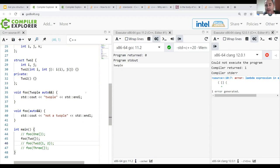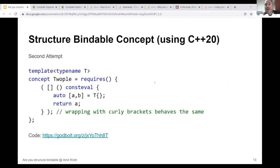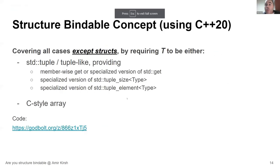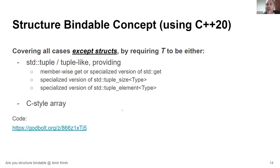Back to the drawing board. We could create a concept that captures the tuple-like cases and C-style array cases, but it would not catch the struct case. And you cannot catch the struct case in C++20, because there's no way to ask a struct: 'do you have all public fields, and how many fields do you have?' So we can have something that checks structure-bindability for tuple-like types and C-style arrays, but not for structs.